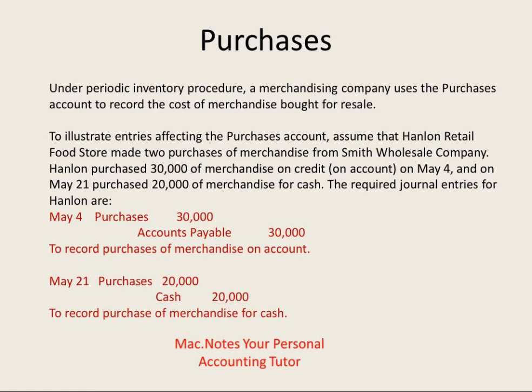Under the periodic system, we use a purchases account to keep track of purchases — we don't use the merchandise inventory account directly. When we buy, we debit the purchases account. For example, on one date we debit $30,000 and credit accounts payable; on May 21st we debit $20,000 and credit cash.